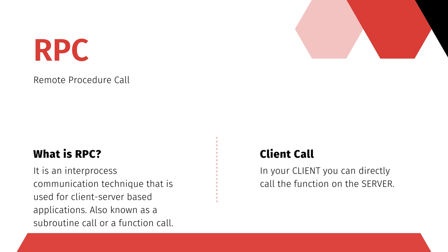We talked about RPC, which stands for Remote Procedure Call. In your client you can directly call a function on the server. For example, assume you have a method called 'create product' on the server. Normally with a REST API you'd initiate an HTTP POST request, provide the URL, and share the product data along with the request. But with gRPC you don't need to do all that — you can directly call the method on the server, like 'server.CreateProduct()', passing the parameter that contains the product details. It's very easy to implement.